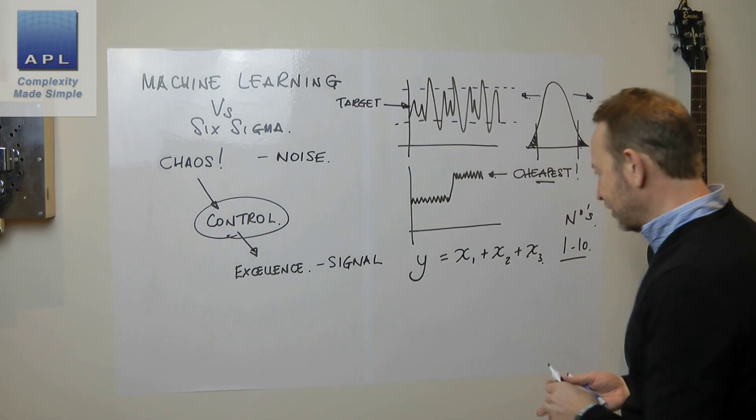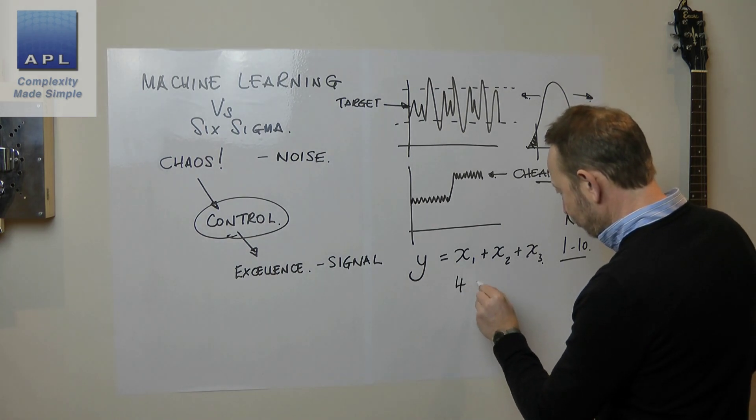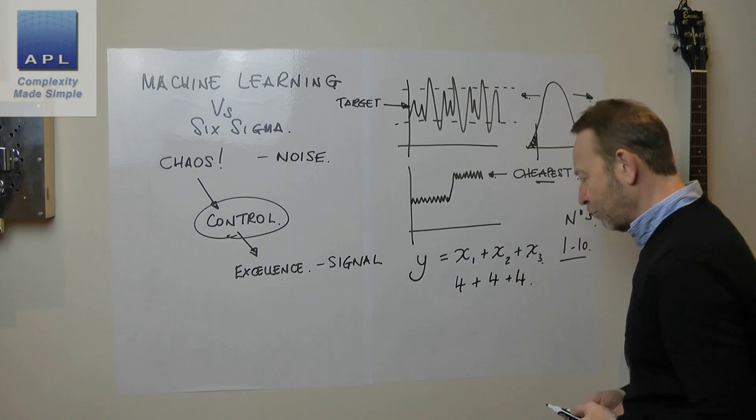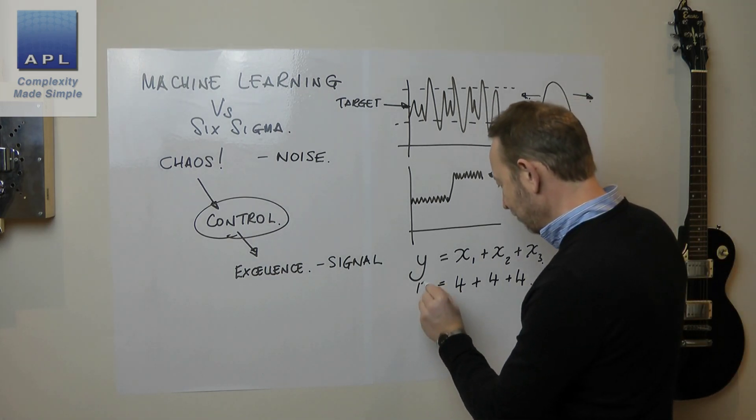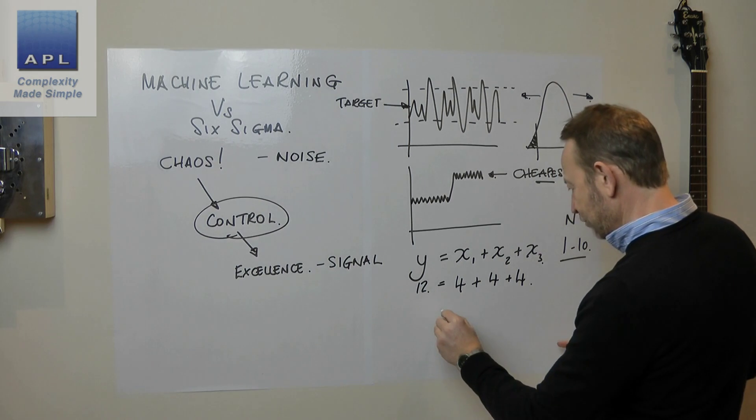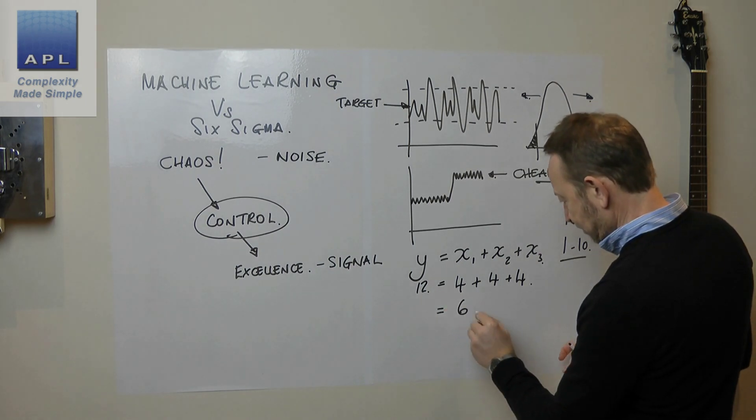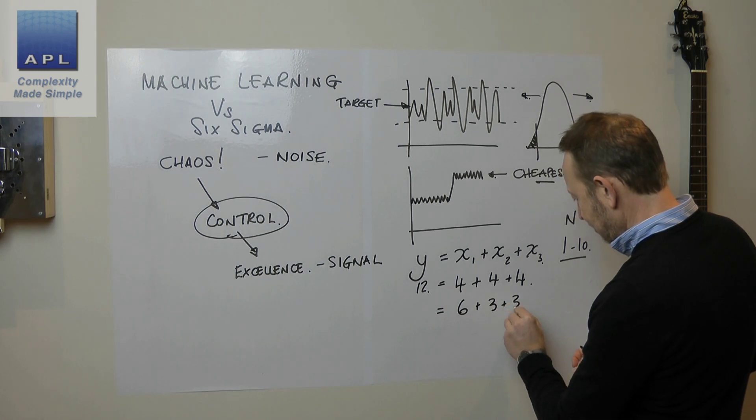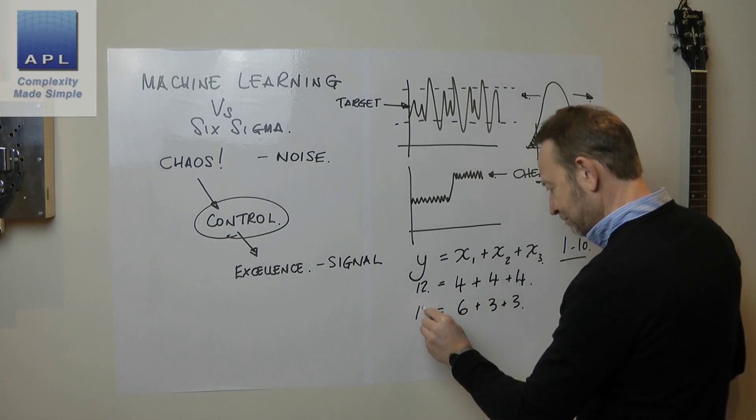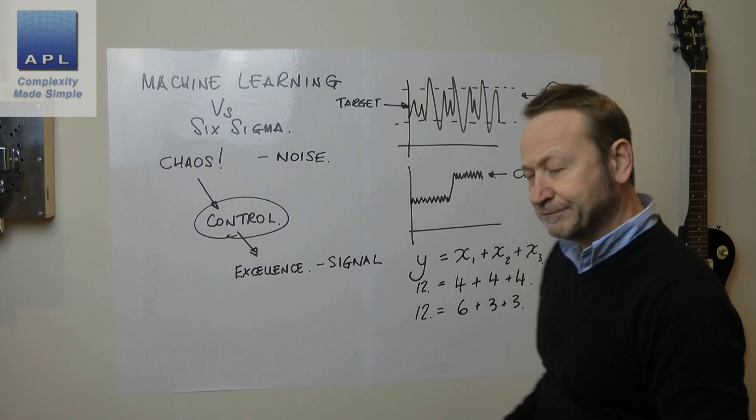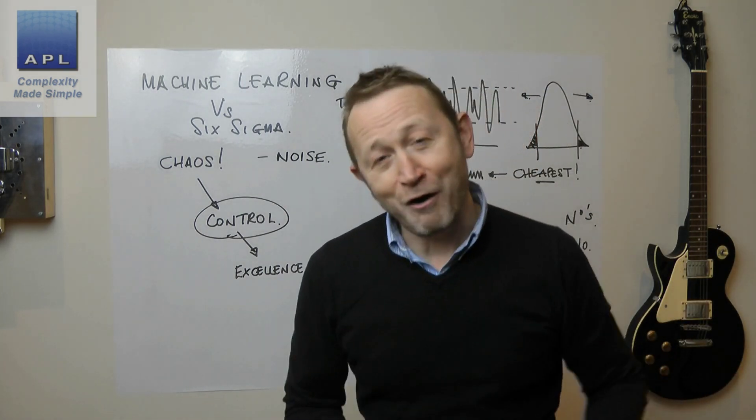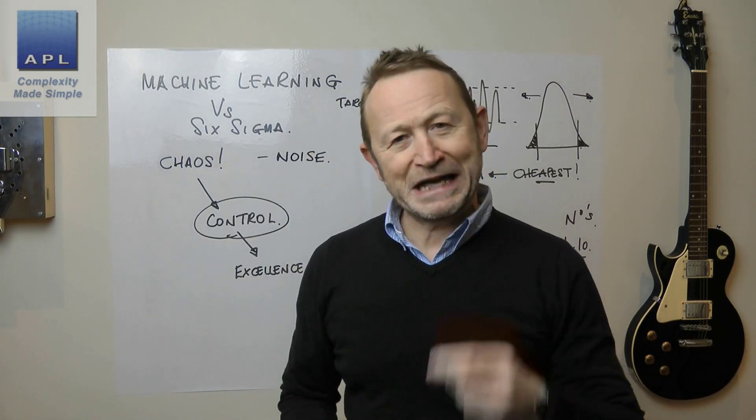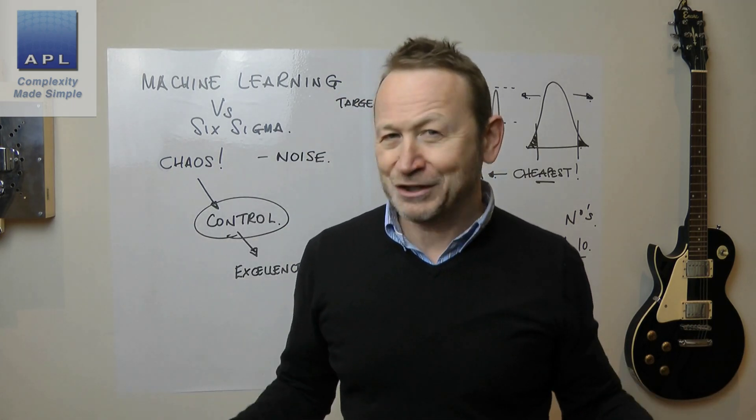Okay, so, give me three numbers that hit 12. Well, it could choose 4, 4 and 4. Of course, it equals 12. No problem. Well done. It could have given you 6, 3, and 3. Also, it's 12. Both, to the computer, are equally okay, aren't they? But here's the point, in real life, they're not equally okay.